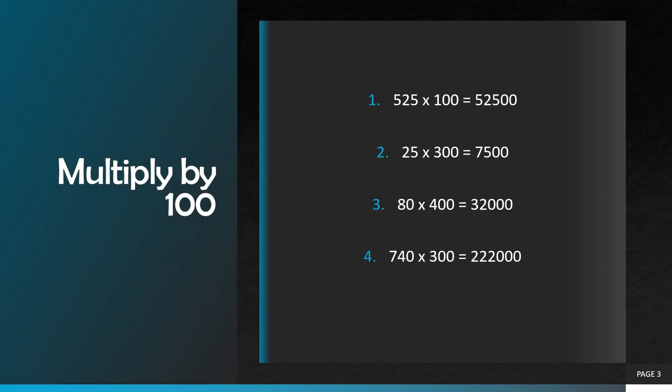Five hundred and twenty five multiplied by one hundred. We have to add two zeros in our answer. Five hundred and twenty five multiplied by one is equal to five hundred and twenty five, so our correct answer will be fifty two thousand five hundred.